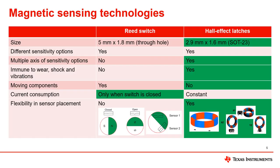There are two common types of magnetic sensors used in flow meters: reed switches and hall effect sensors. Reed switches consist of metal leads inside of a gas-filled tube that form a physical switch. When a magnetic field triggers the device, the metal leads touch and complete the circuit to indicate the magnetic field is present. Reed switches are popular because of their low power consumption and low cost, but are not immune to wear, shock, and vibration.